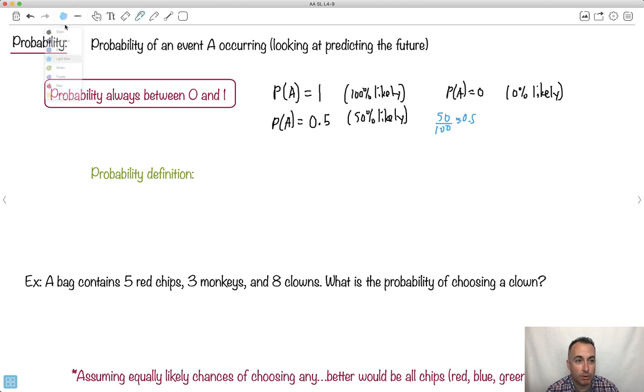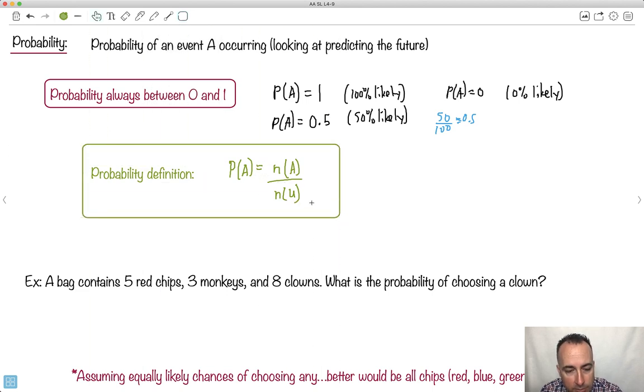Now, how do we formally define the probability? This is in your formula booklet. Probability of A occurring. How do we actually figure this out? Well, we say it's n(A) - I'll explain what this means - over n(U). This is a formal definition. This right here, you actually get in your formula booklet.